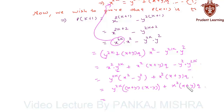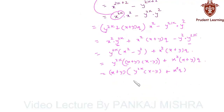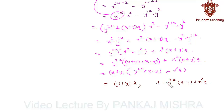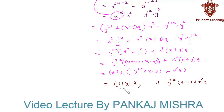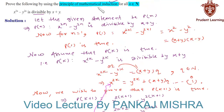We can take (x plus y) common from both terms, giving us (x plus y) into [y to the power 2k into (x minus y) plus x squared into q]. We express this as (x plus y) times r, where r equals y to the power 2k into (x minus y) plus x squared times q, and r is a natural number. This expression is divisible by x plus y, so P(k+1) is true whenever P(k) is true. Hence, by the principle of mathematical induction, P(n) is true for all natural numbers n.